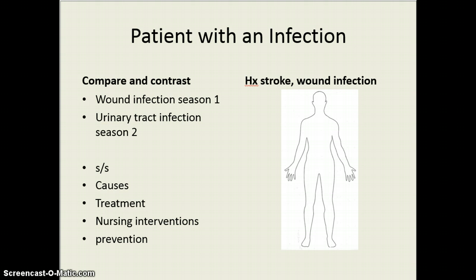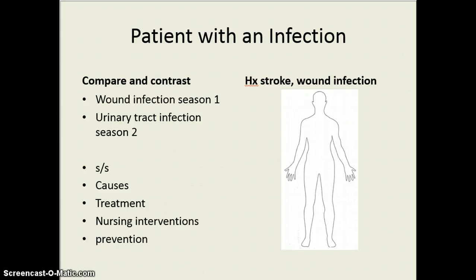In looking at a patient with an infection, our patient here has had a stroke and also has a wound infection. A urinary tract infection is something very common for a hospitalized patient to have. When we think about diabetics with very poor blood sugar control, diabetics often have poor circulation, which predisposes them to a higher rate of infections. We'll talk about that more in the elimination unit as we look at which types of patients are at much higher risk.